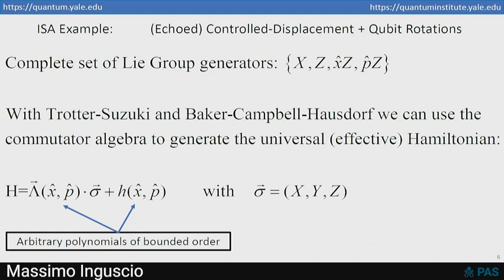And this gives us universal control. There's a complete—just only need four Lie group generators shown there. And by combining gates based on these, you can generate the universal effect of Hamiltonian for a single qubit coupled to a single oscillator that's shown in the bottom equation. There's a polynomial in position and momentum of the oscillator, little h, and another polynomial that's a vector of three polynomials dotted into the Pauli matrices. And that's the most general arbitrary Hamiltonian polynomial form for this.